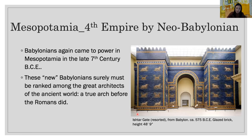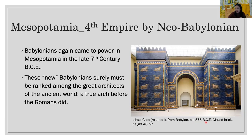After Assyria, the Babylonians came to power again in Mesopotamia in the late 7th century, forming a kingdom called the Neo-Babylonian empire. These new Babylonians surely must be ranked among the great architects of the ancient world. Look at this gate architecture — built around 575 BCE, about 2,500 years ago. They developed a true arch before the ancient Romans did, and they were masters of decorative design for architecture.